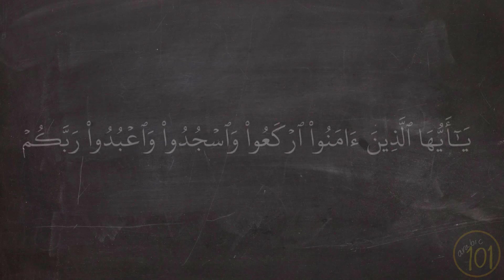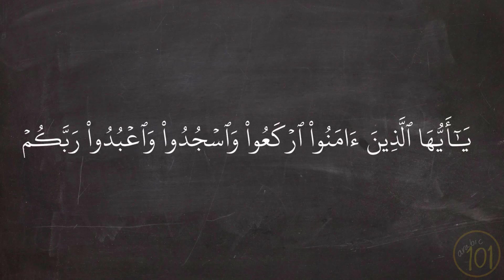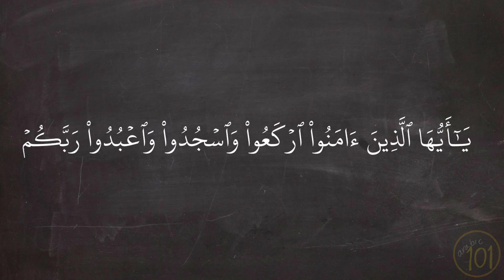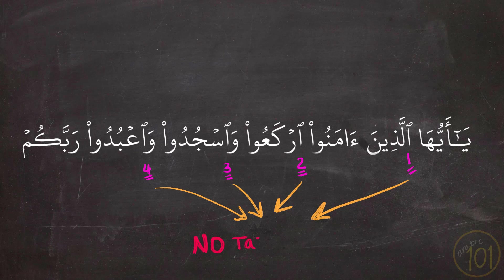Can you see how many Hamzat Wasl there are in this ayah? Well, there are four — that's one, two, three, and four. Have you noticed that every single Hamzat Wasl in the Holy Quran doesn't have any vowel on top or under it? There is no tashkeel whatsoever on any of them.